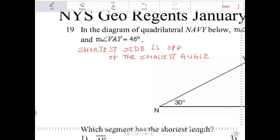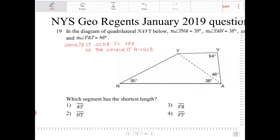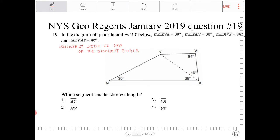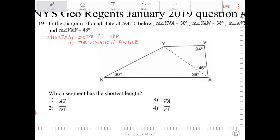And the inverse of this is also true, that the longest side is opposite of the longest angle. This triangle inequality theorem works within the triangle itself, meaning I can't compare two different triangles. I can only compare sides within the same triangle.